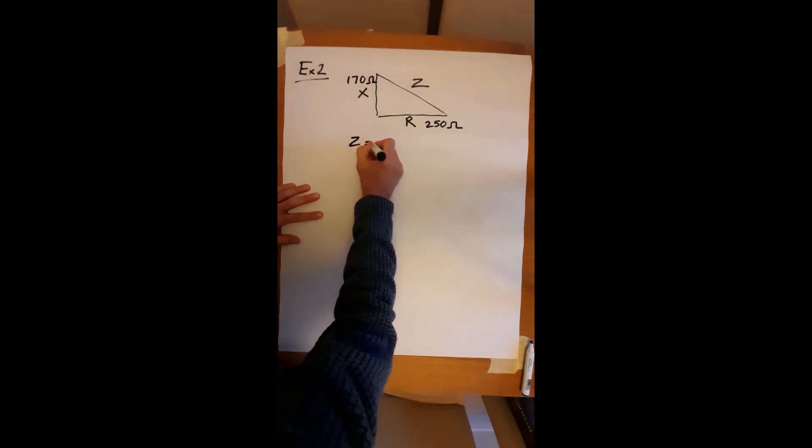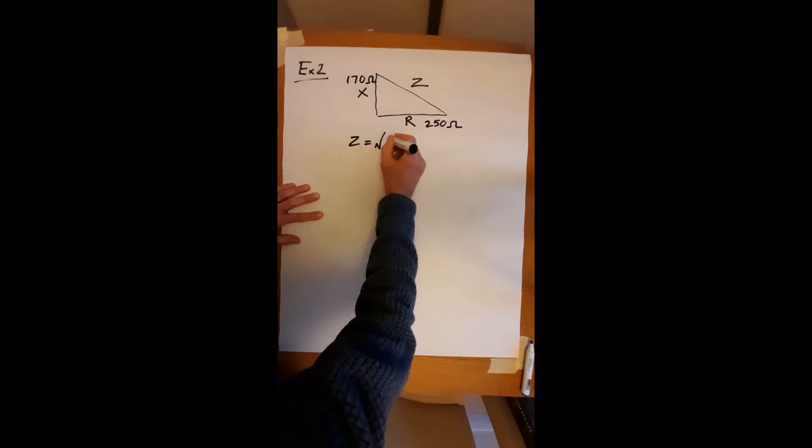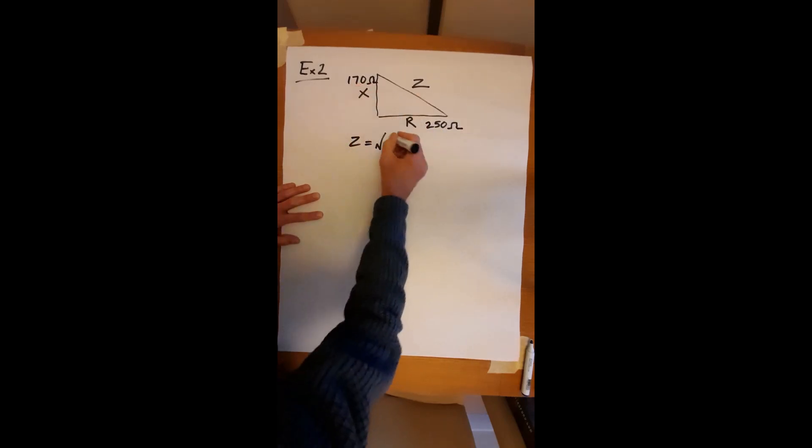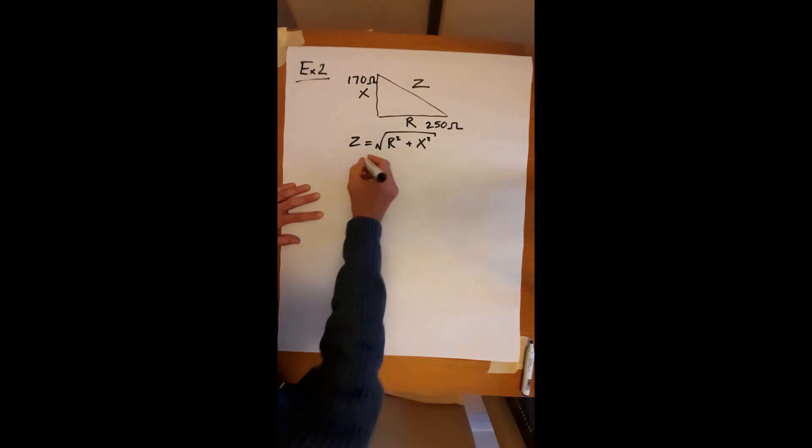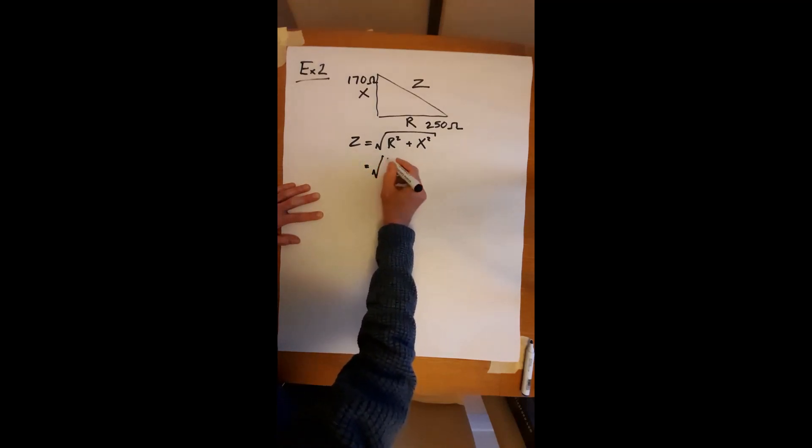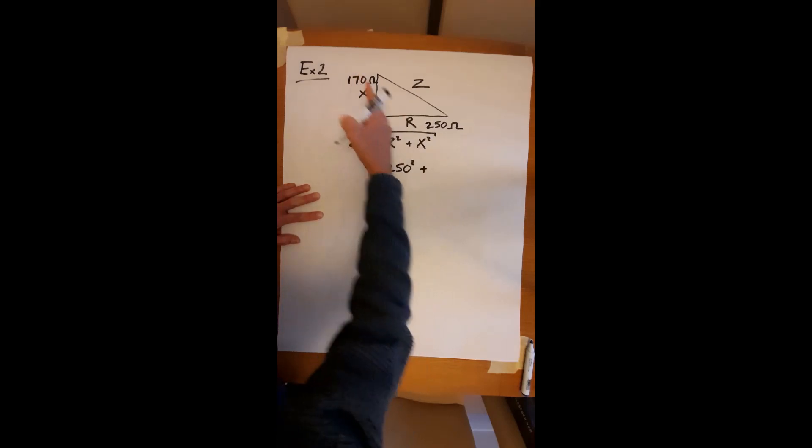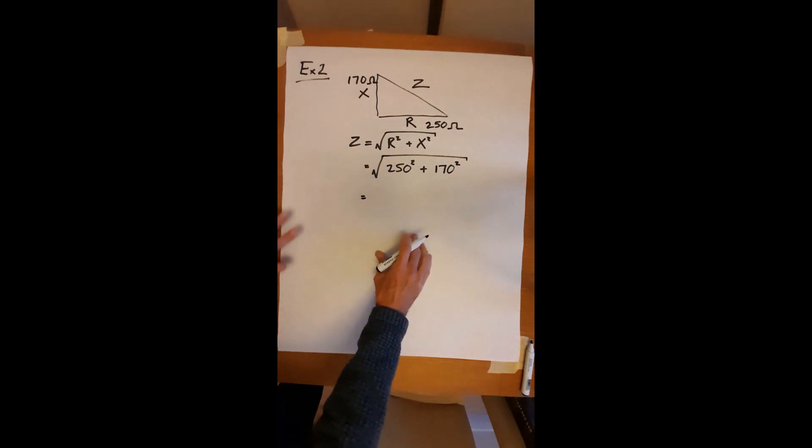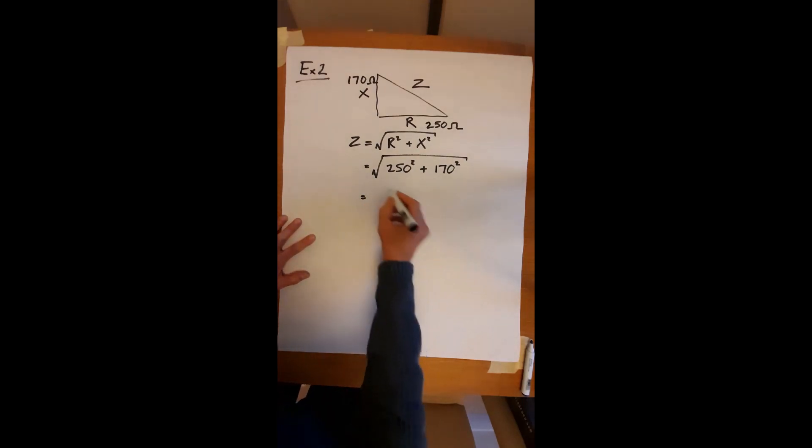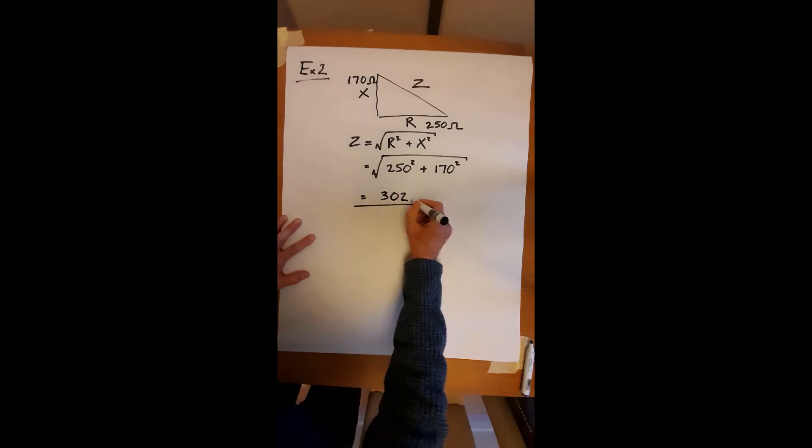So Z equals the square root of the two shorter sides, each squared and added. Square root of the lot. Put your numbers in. Square root of 250 squared plus 170 squared, and it's the square root of the whole lot. Come back to that in a moment. And if you work that out, put it in your calculator, you'll come up with something around 302. That is ohms.